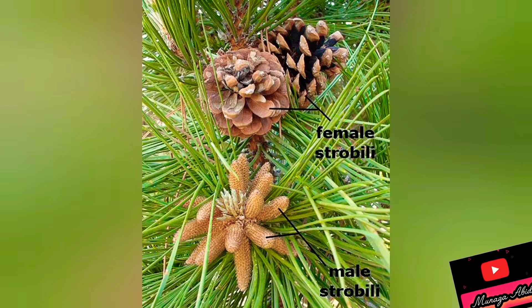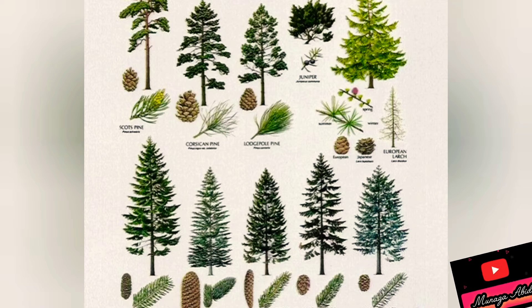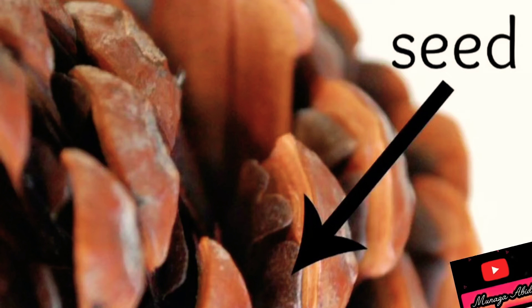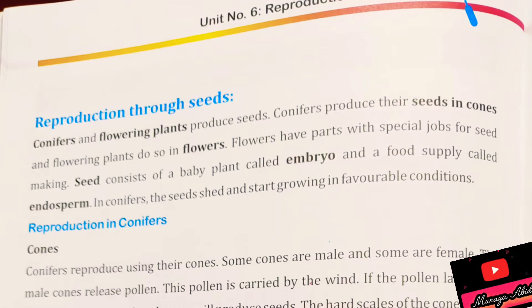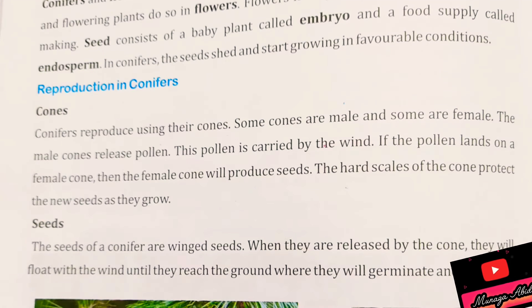Conifers are of many types. You have seen these tall trees. These cones after fertilization have seeds, and if they fall down and get suitable conditions, they sprout into baby plants. Conifers and angiosperms are produced by seeds.